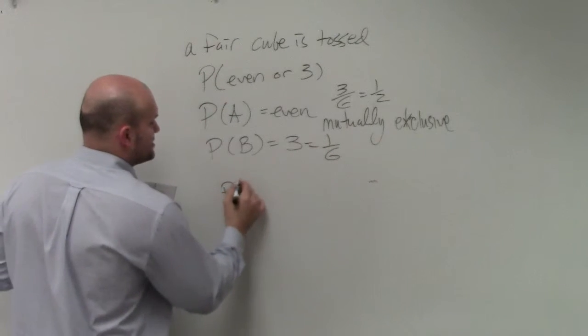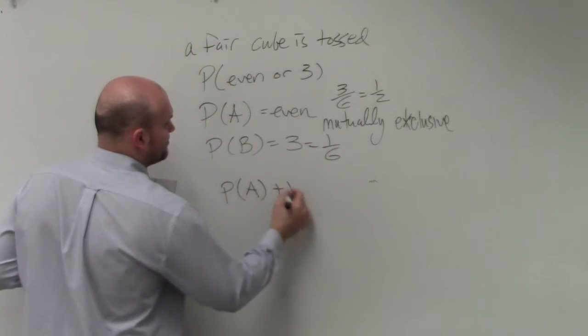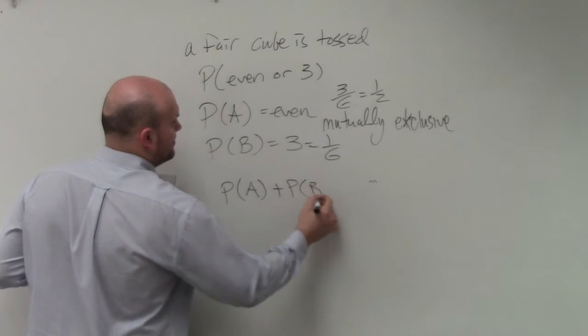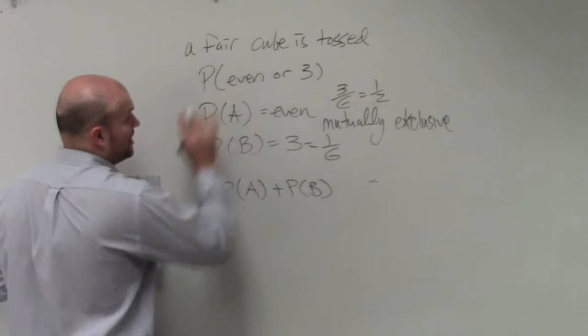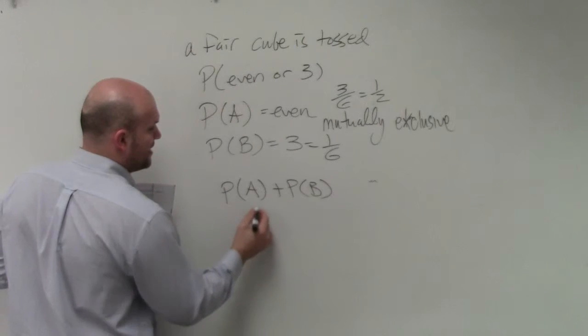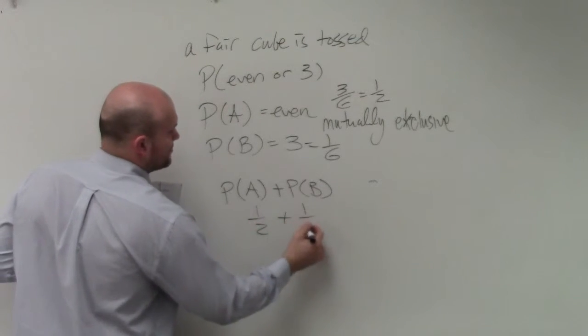So therefore, since they're mutually exclusive, I do probability of A plus probability of B. That's going to give me a probability of even or odd. So therefore, I have 1 half plus 1 over 6.